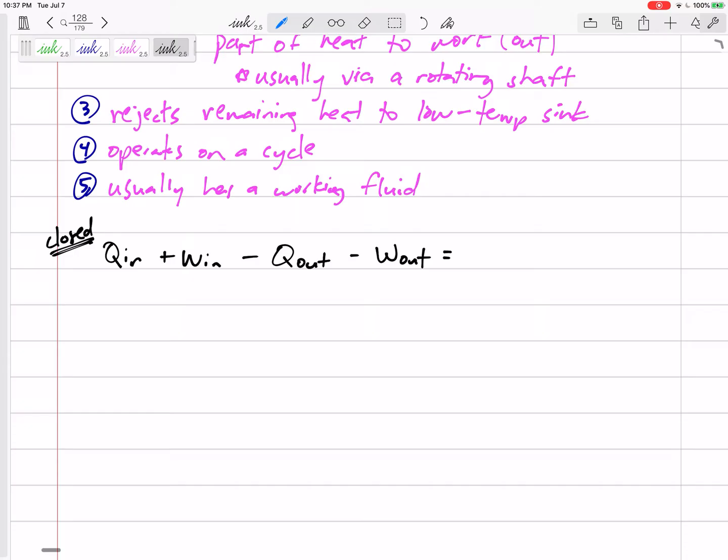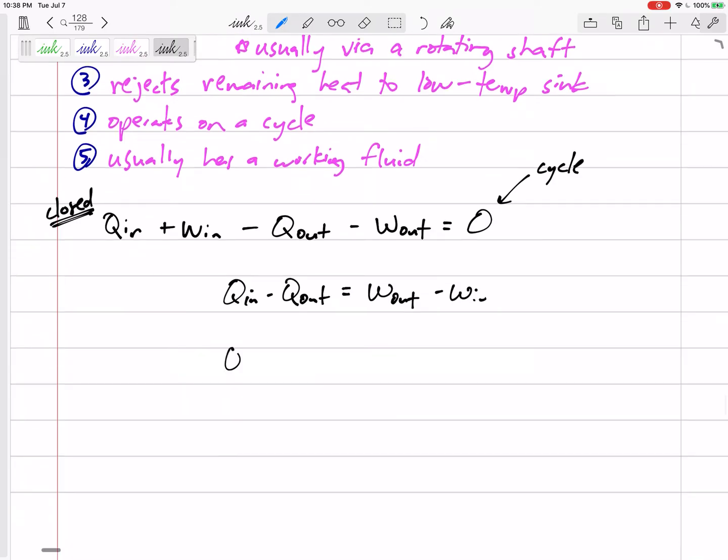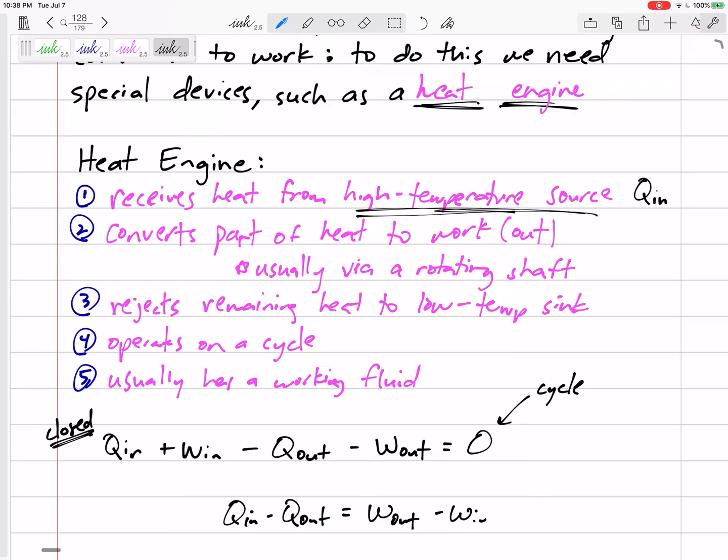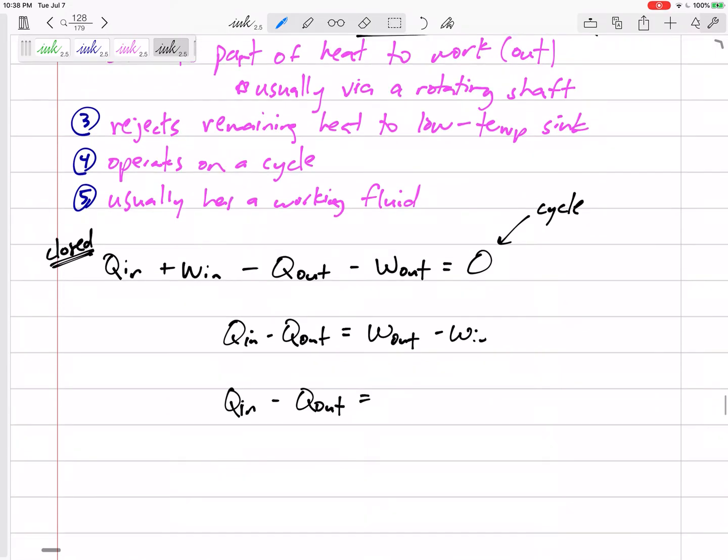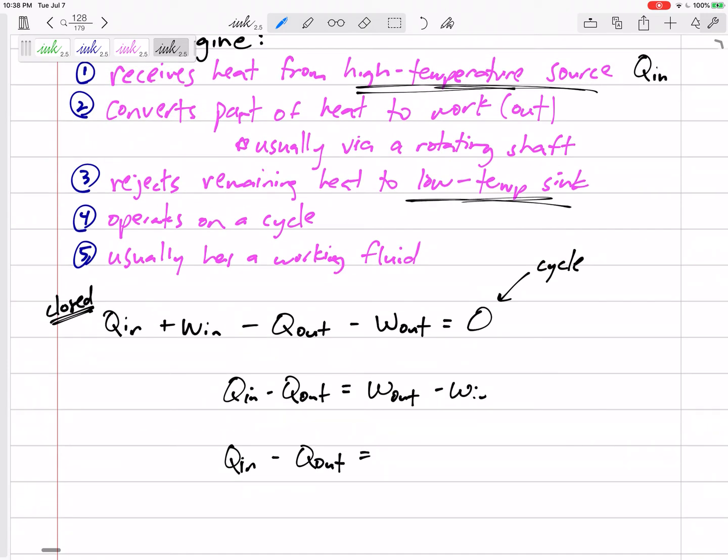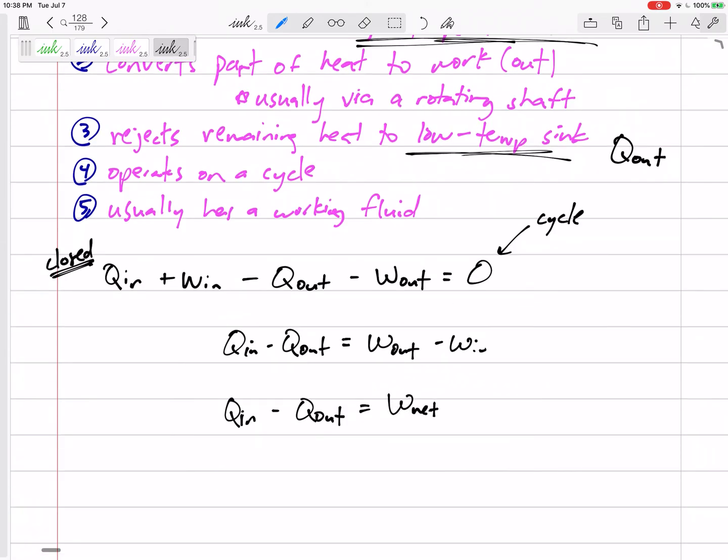If it's a closed system on a cycle with no change from initial to final, then Q_in + W_in - Q_out - W_out = 0. Our conservation of energy equation: Q_in minus Q_out equals work out minus work in, which is W_net. So Q_in from the high temperature source minus Q_out rejected to the low temperature sink equals W_net.